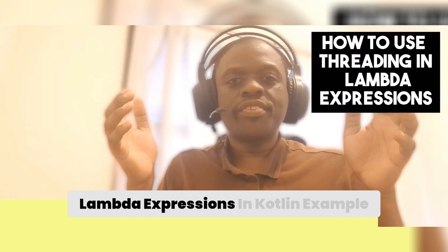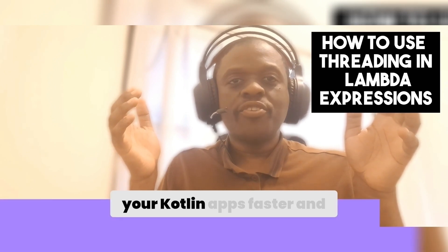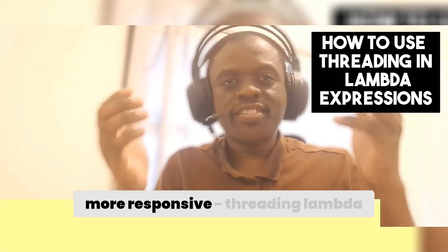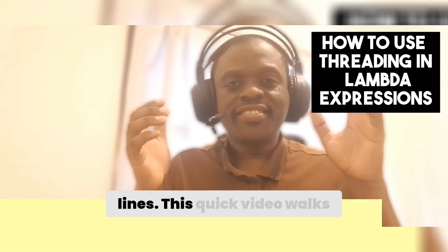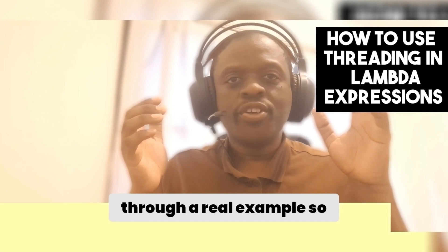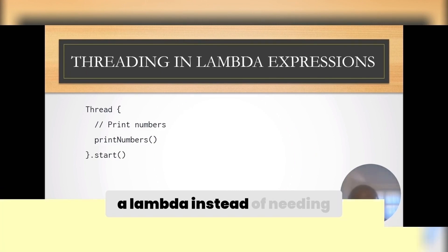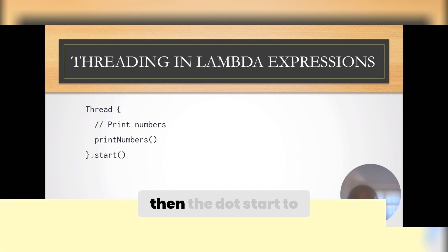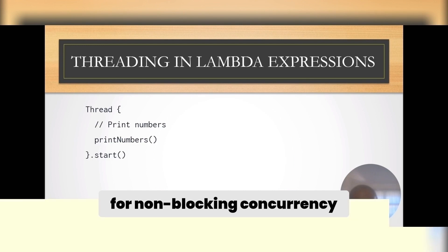How to use threading with lambda expressions in Kotlin. Threading lambda expressions can greatly improve performance. We can create threads by passing a lambda instead of needing a separate Runnable class — for example, a Thread with a printNumbers function, then calling .start() to start the thread. This results in cleaner syntax without extra classes. Lambdas also work great with coroutines for non-blocking concurrency.